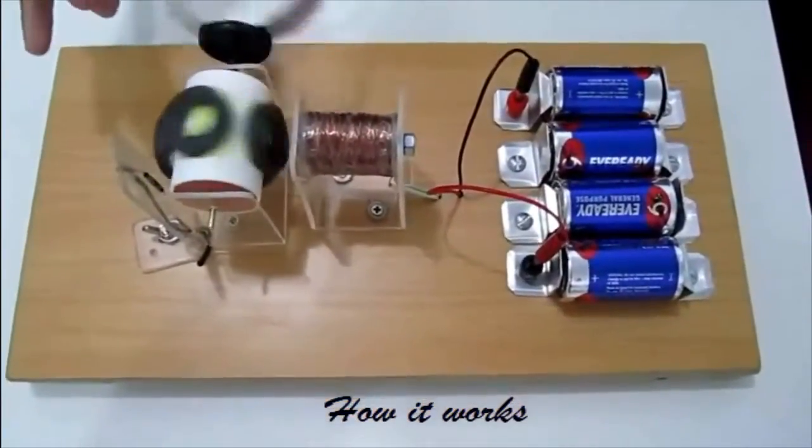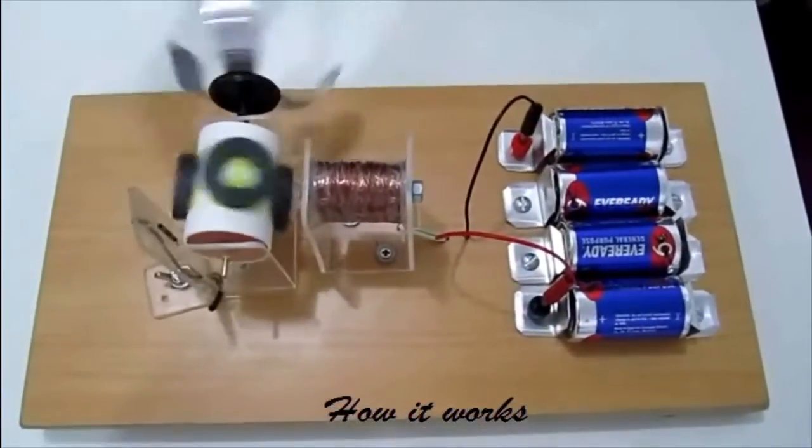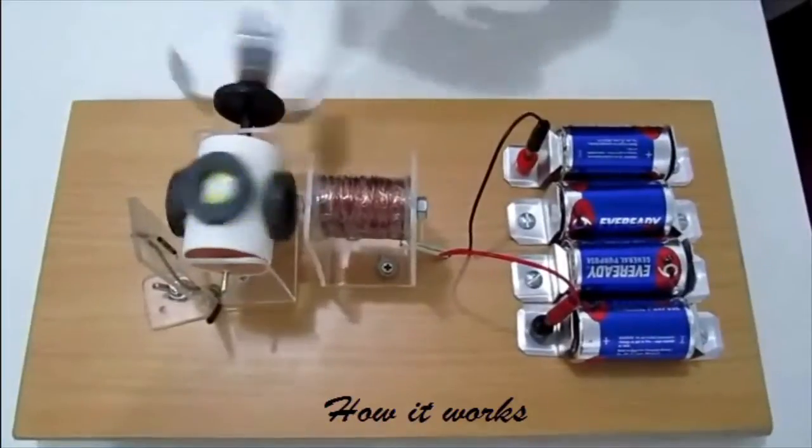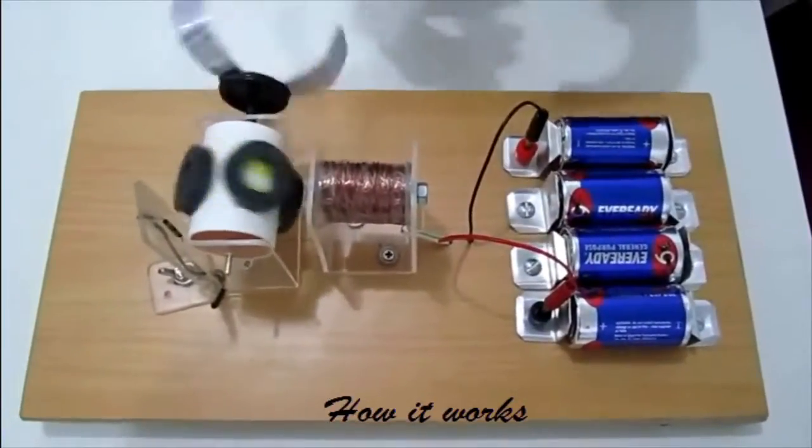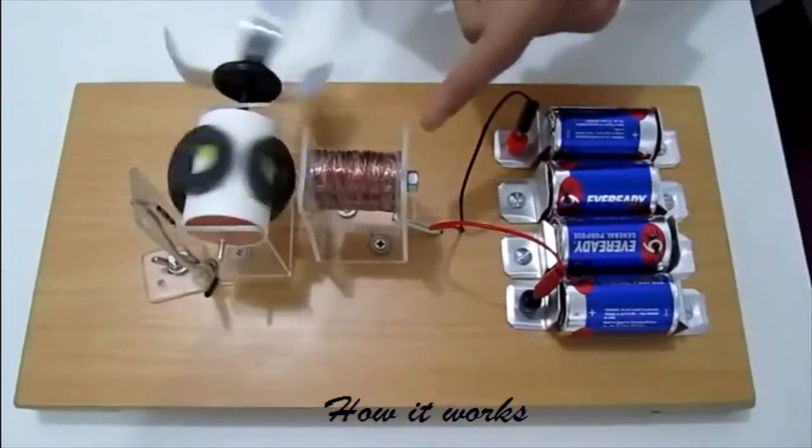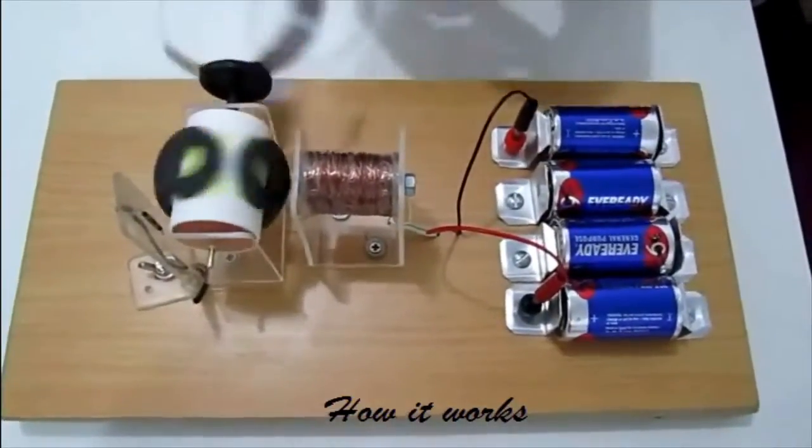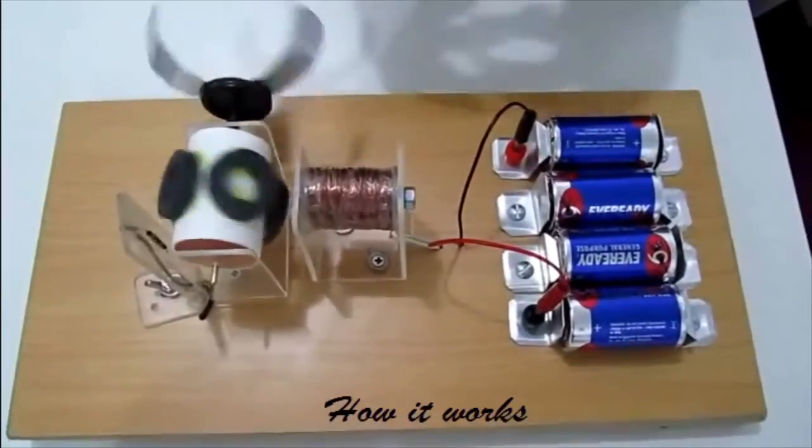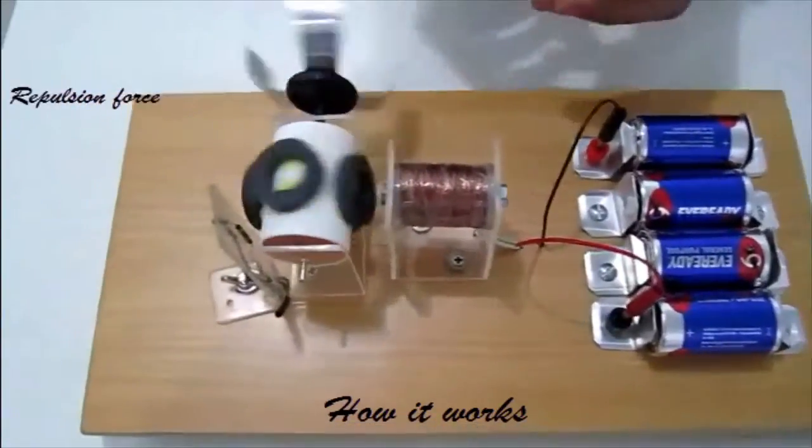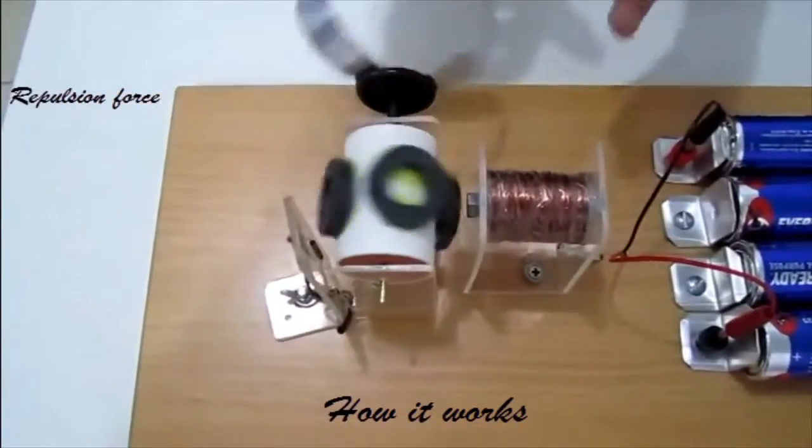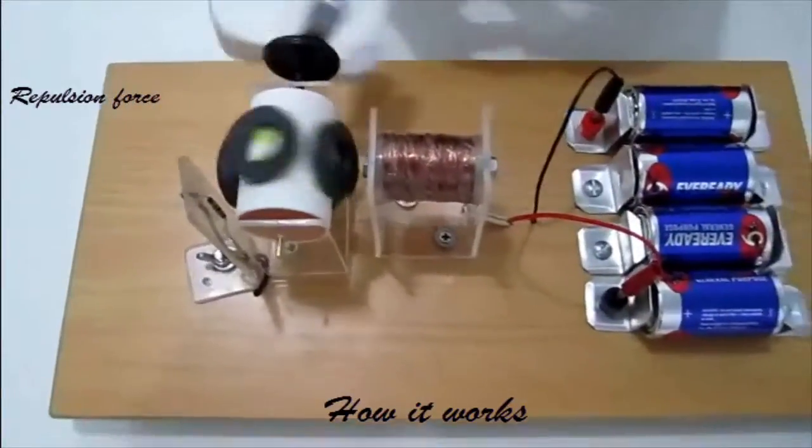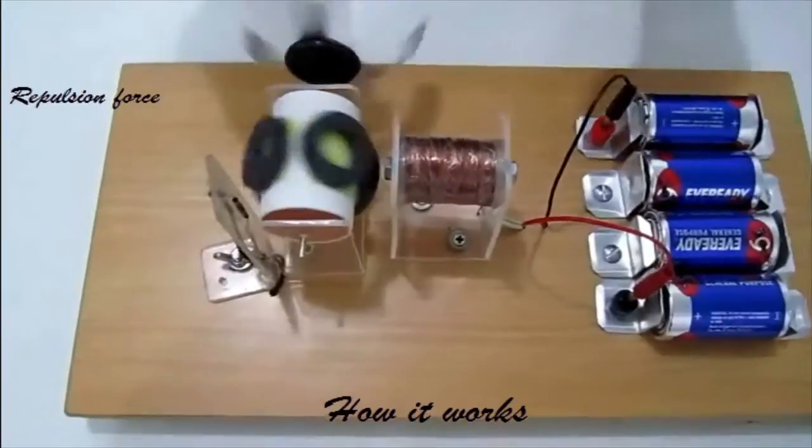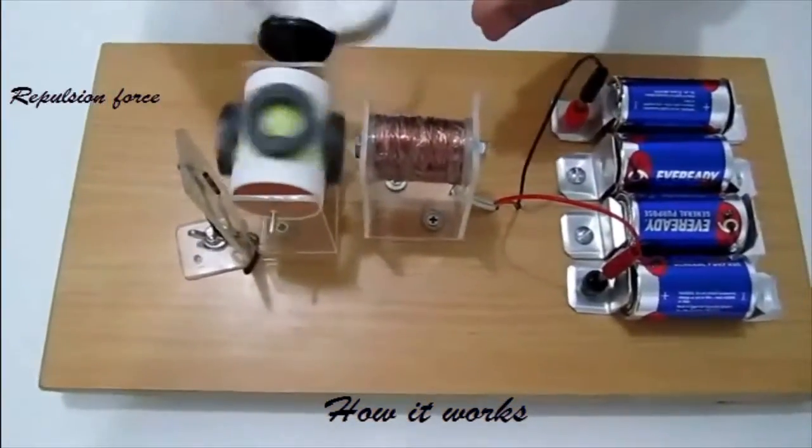When the permanent magnet comes closer to the reed switch, it closes the circuit, causing an electric current to flow. When the current flows through the copper wires around the electromagnet, the electromagnet turns on. This creates a magnetic field around the electromagnet, which causes a repulsion force between the electromagnet and the permanent magnet. This repulsion force causes the permanent magnet to move.